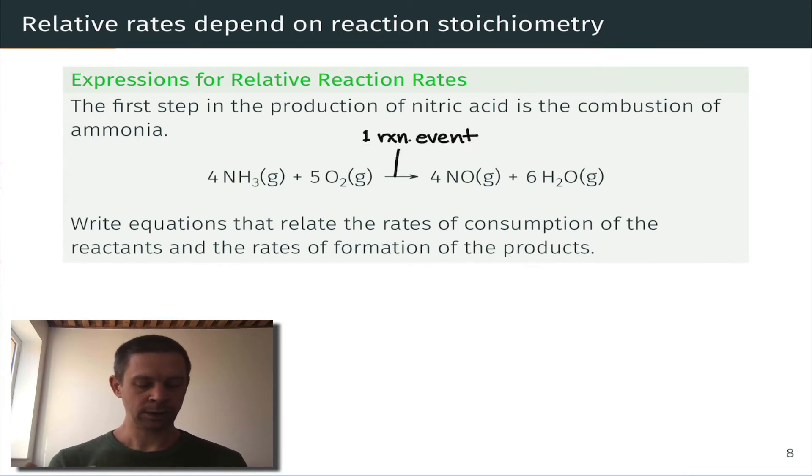So first of all, one reaction event takes place kind of every time we cross the arrow. That means four molecules of NH3 are used up, five molecules of O2 are used up, four molecules of NO are produced, and six molecules of H2O are produced. And I'm going to be using these colors for these species as we solve this problem.